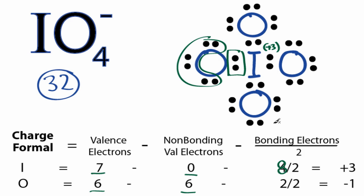And then bonding, we have 2, 2 divided by 2. 6 minus 6 is 0, minus 1 gives us a minus 1. So the formal charge on all the oxygen atoms is minus 1.